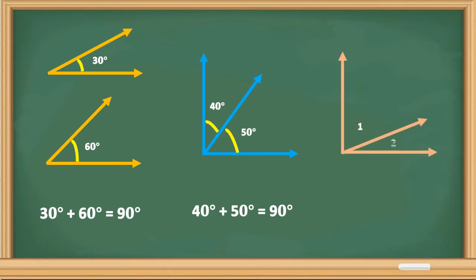Next, we have angle 1 and angle 2. Observe that angle 1 and angle 2 are in a 90-degree angle. So if we add these two angles, the measure of angle 1 plus the measure of angle 2 equals 90 degrees. Therefore, angle 1 and angle 2 are complementary angles.